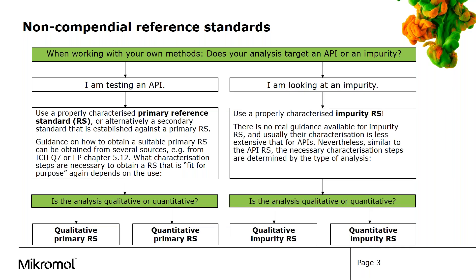If you are looking at an impurity, you can use an impurity reference standard, which is usually characterized less extensively than a primary API reference standard. Nevertheless, the necessary characterization steps depend on whether you want to identify or quantify the impurity.